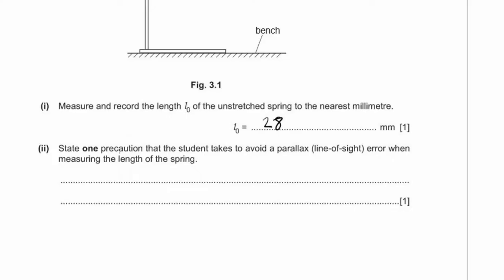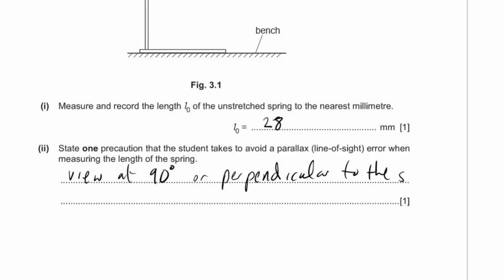A2: state one precaution to avoid parallax error when measuring the length of the spring. The key point is to view at 90 degrees — or perpendicular — to the scale. You could also use a fiduciary marker, which would work very well.